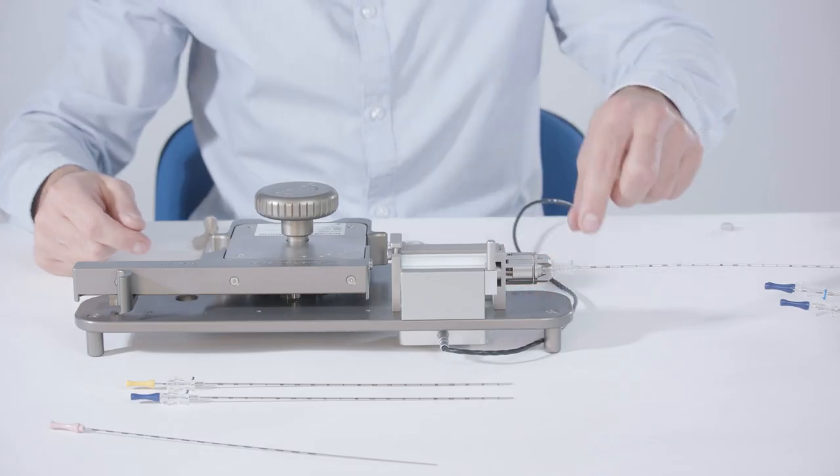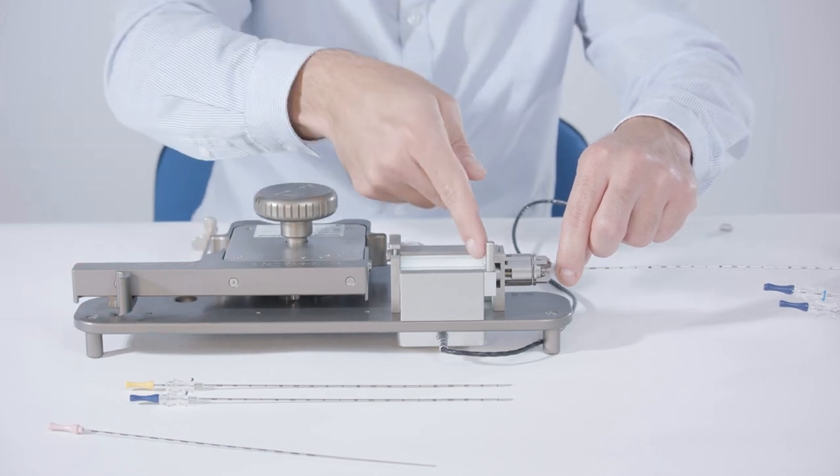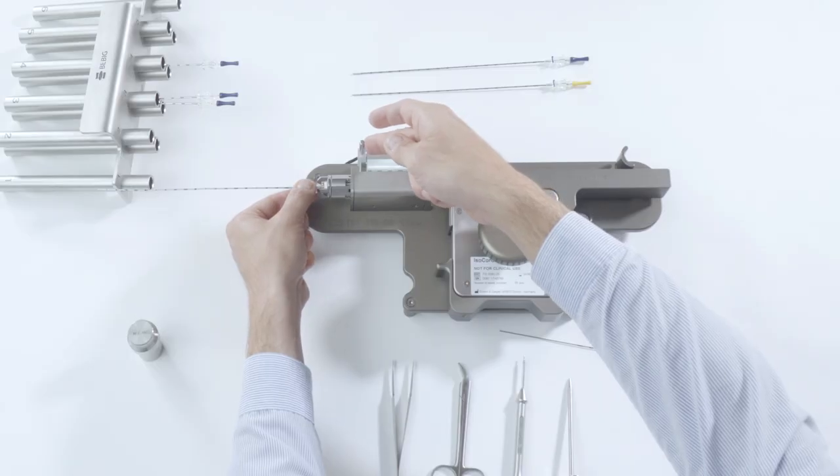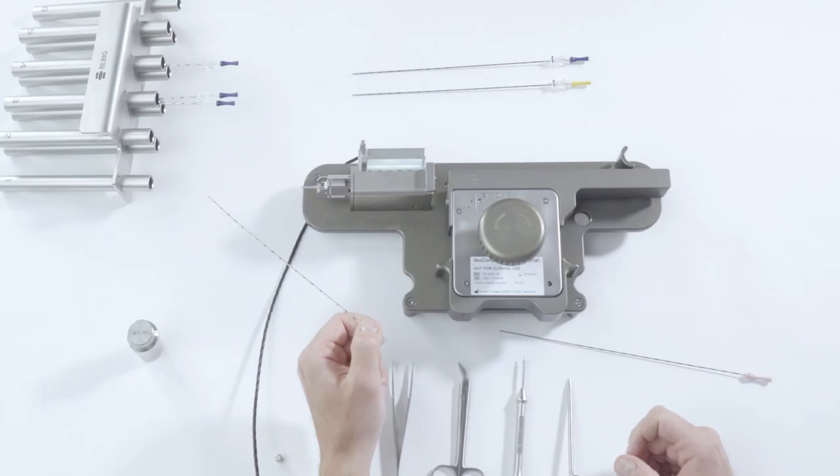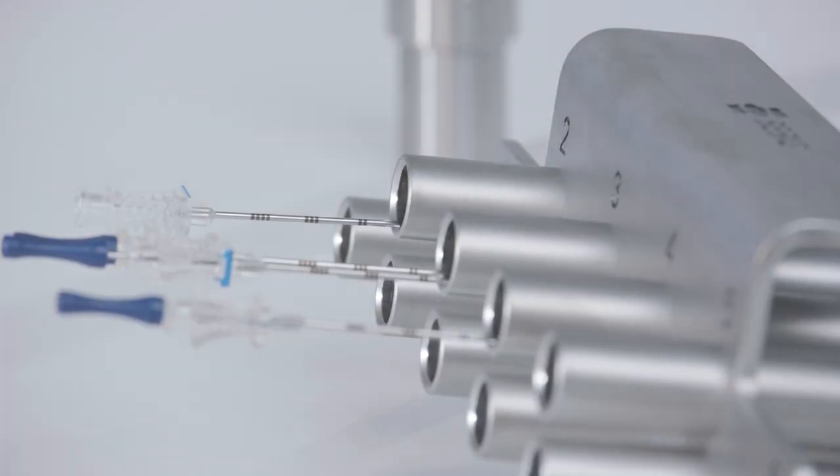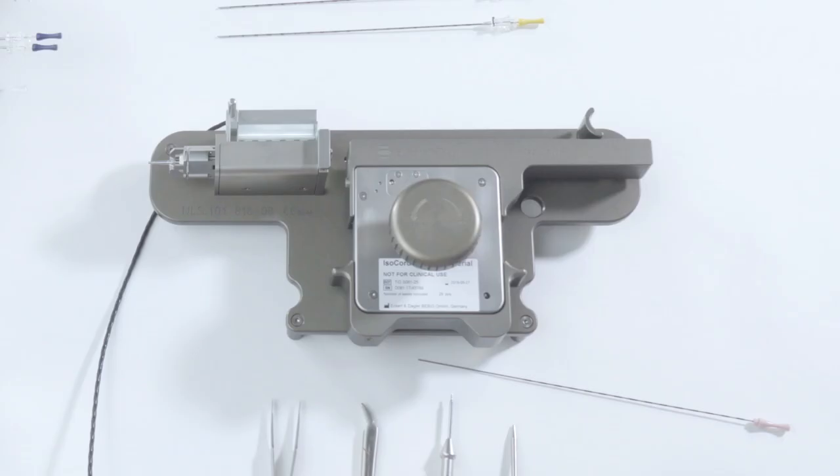You can then remove the needle by grasping the loaded needle by the adapter and activating the unlocking lever on the NLS. You can store the loaded implantation needle in the needle magazine temporarily before starting the treatment or implant directly.